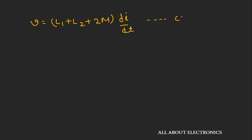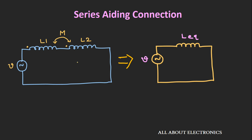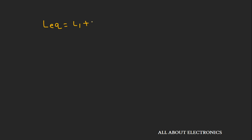If we replace the two inductors by their equivalent inductance L_equivalent, then voltage V equals L_equivalent into di/dt. Comparing these two equations, we get L_equivalent equal to L1 plus L2 plus 2M, which is the expression for a series-adding connection of two mutually coupled inductors.